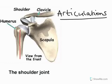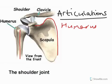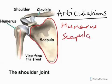Here is our first one, which we refer to as our humerus, or upper arm. Humerus is the word that gets you a mark. And here we have our scapula, or shoulder blade. Scapula is the term which you need to use.